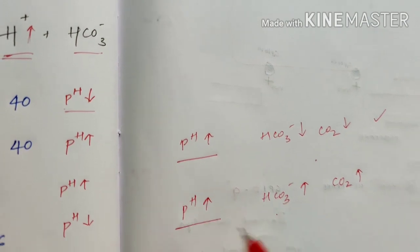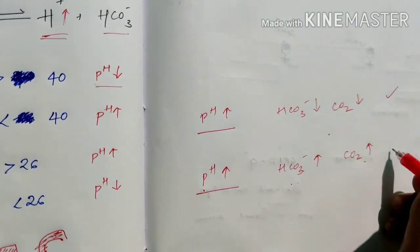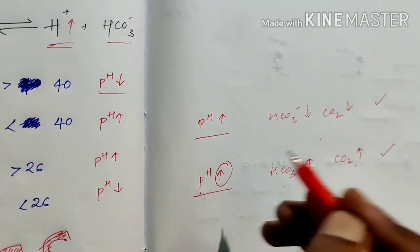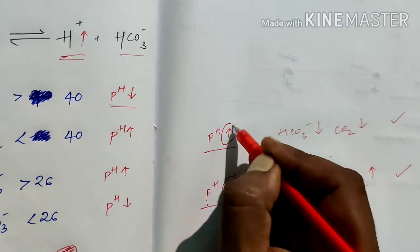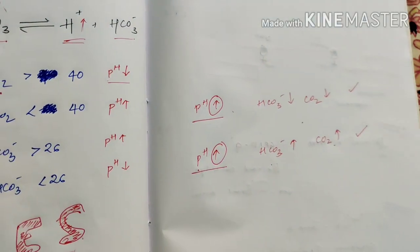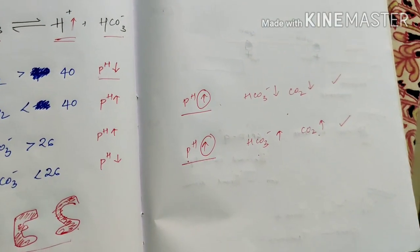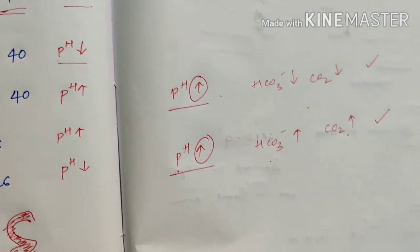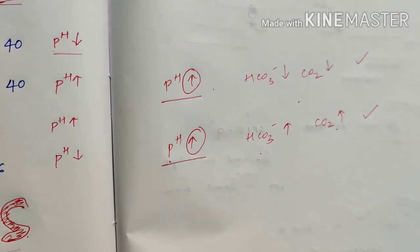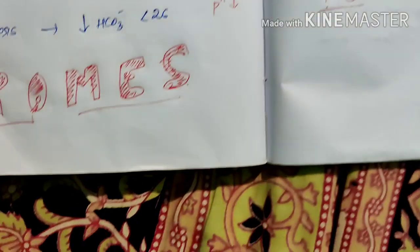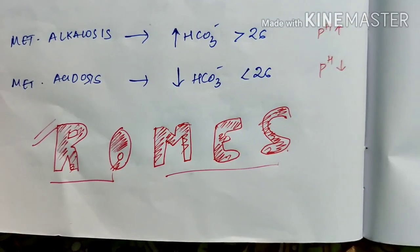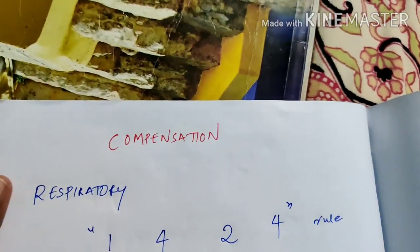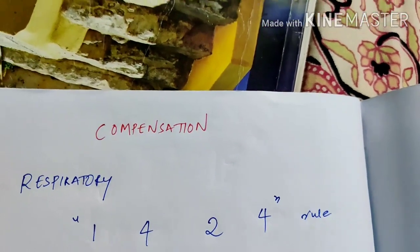In metabolic alkalosis, pH increases, HCO3 minus increases, and CO2 increases — all in the same direction. ROAMS: Respiratory Opposite, Metabolic Same. This is a complex concept remembered in a simple way.